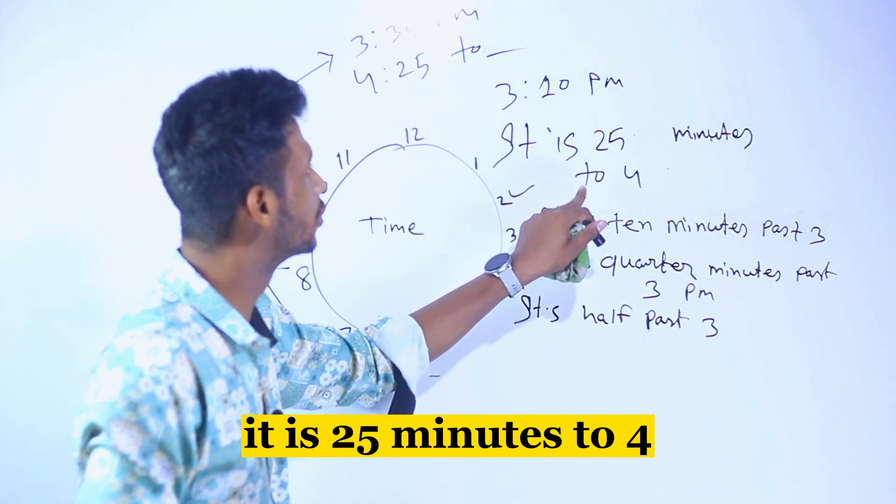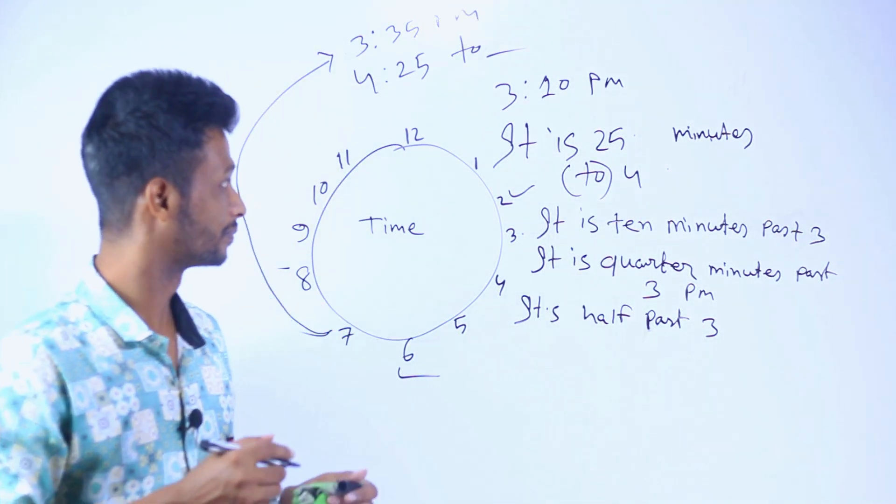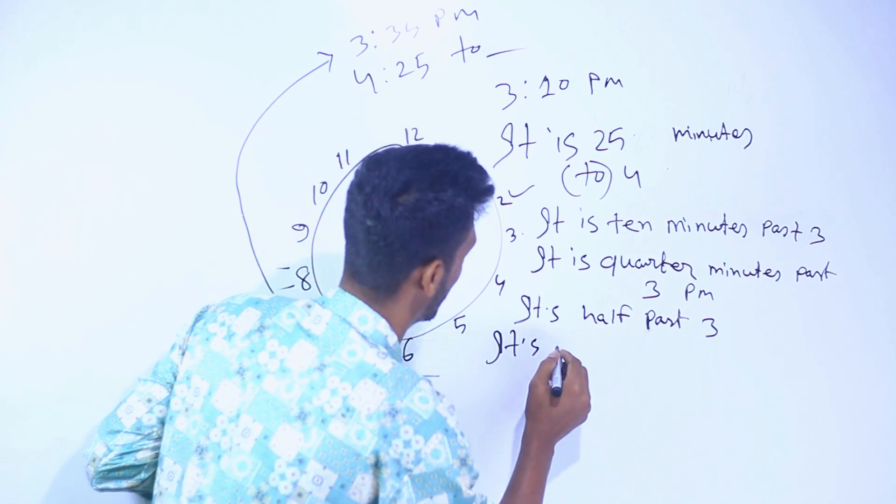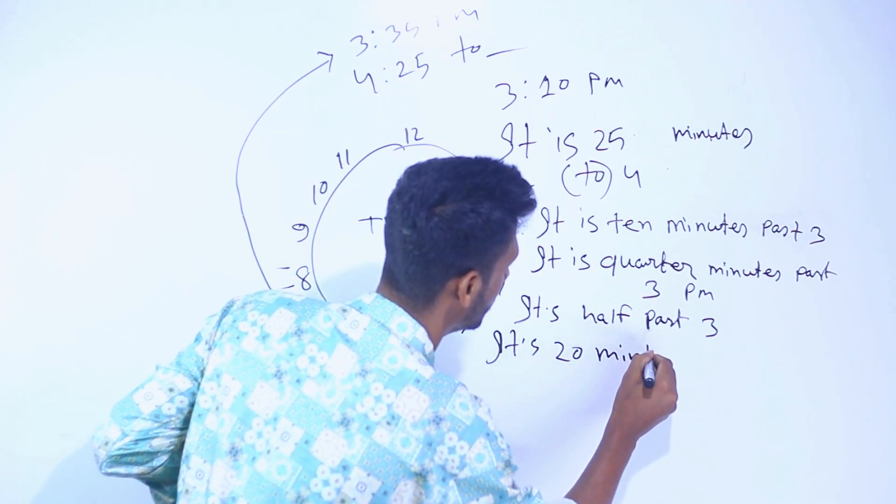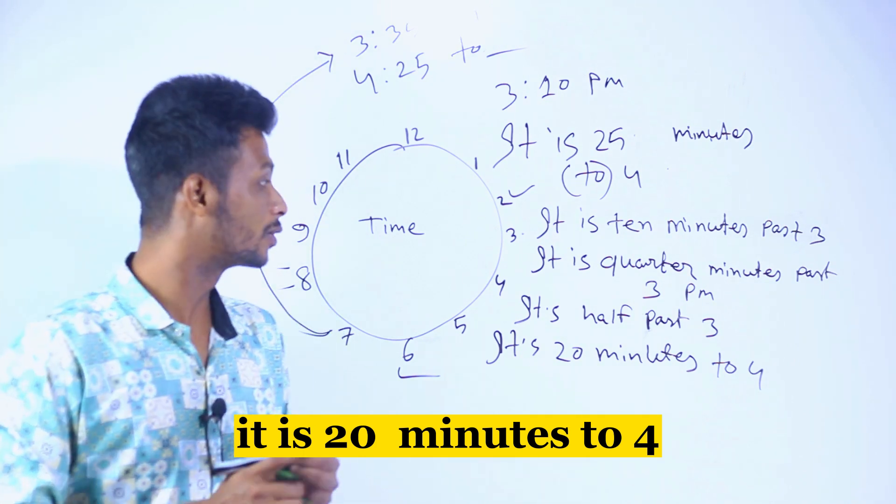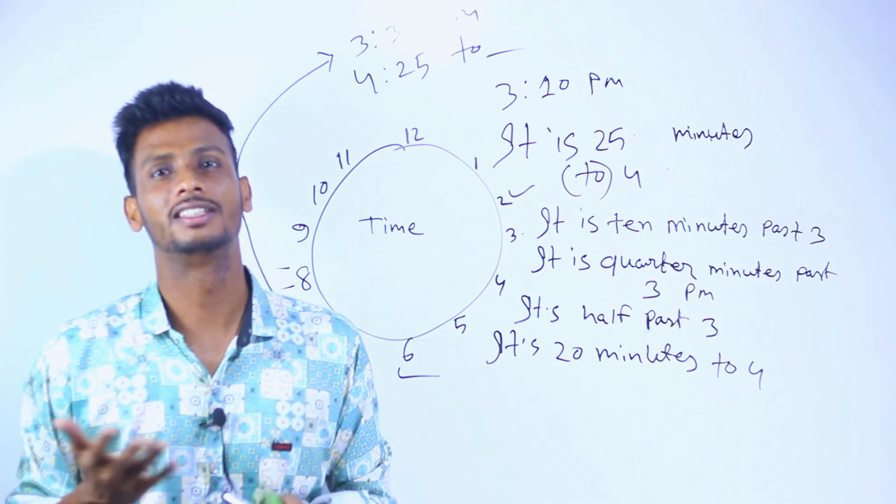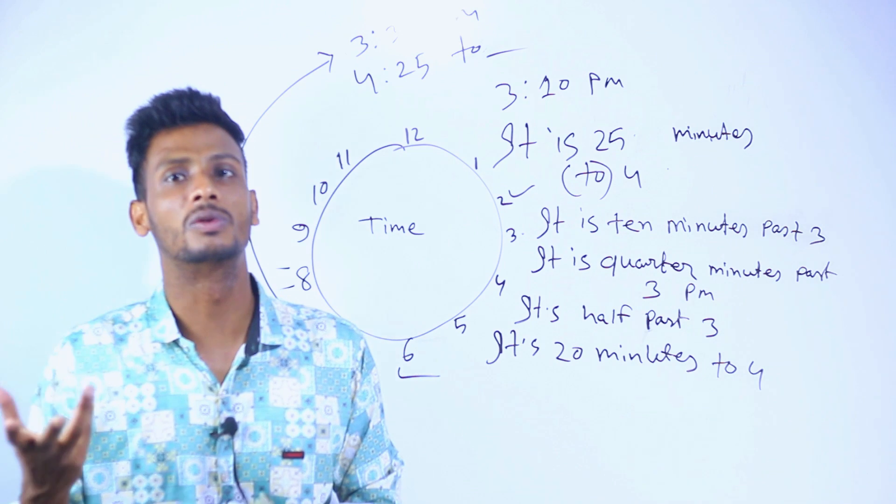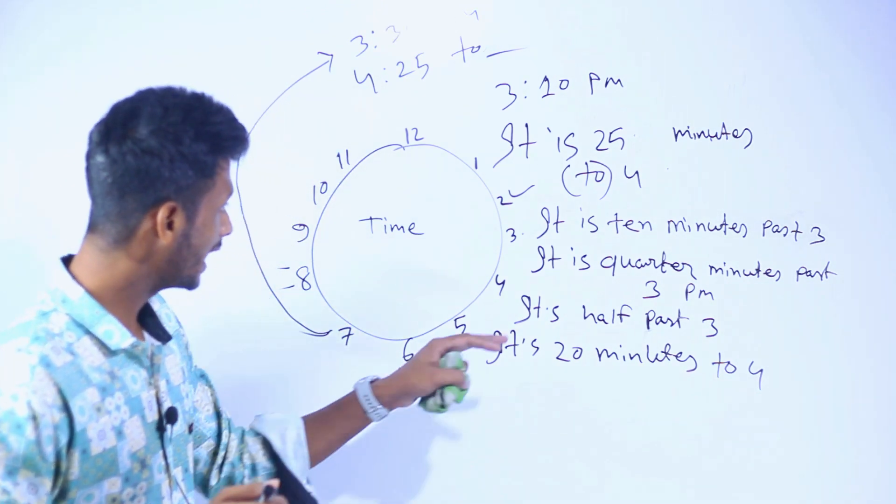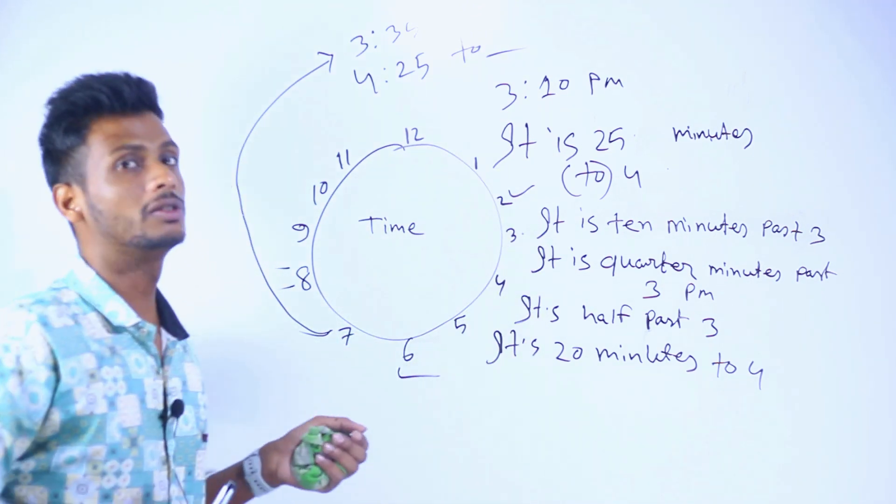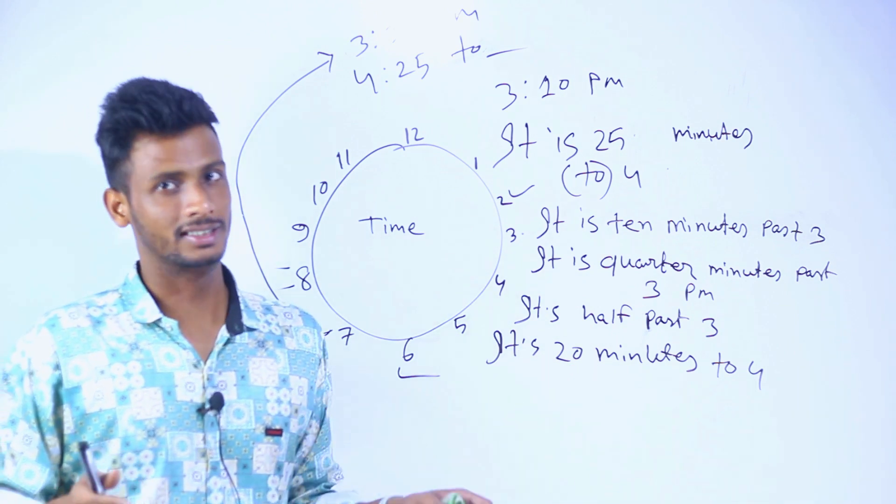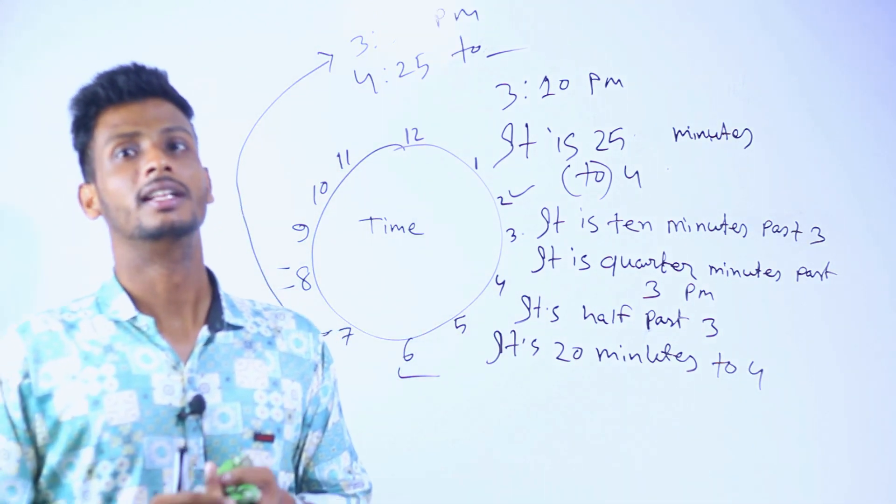It is 25 minutes to 4. That means it is 25 minutes left until 4.